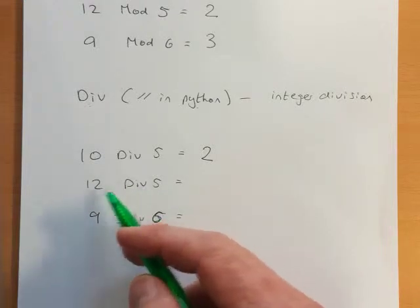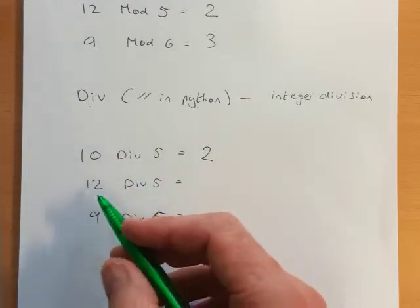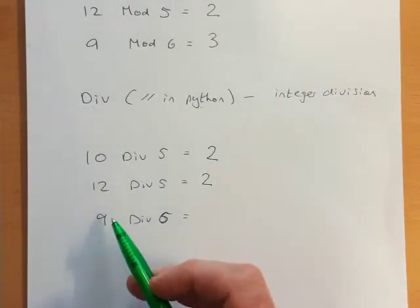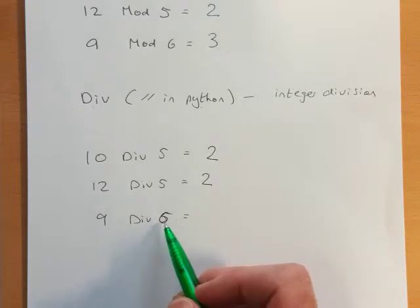Well it's 2 again. We've got the 2 left over but we're not concerned about that, but the answer actually happens to be 2. And then the other question that we did before, 9 div 6 - well actually that fits in once.